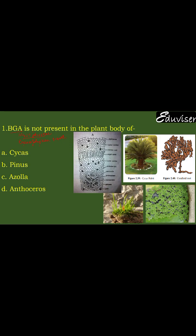The first option is Cycas. Cycas is a gymnosperm plant. In Cycas, the coralloid roots have an internal anatomy showing an algal zone where BGA is present. So BGA is present in Cycas. Next is Azolla — Azolla is a water fern. In Azolla you find Anabaena, which is a blue-green algae. So Azolla is also not the answer.